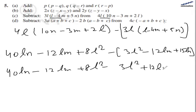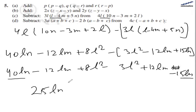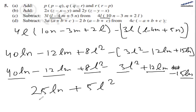Opening the second bracket gives minus 15ln. So 40ln minus 15ln becomes 25ln. The terms minus 12lm and plus 12lm cancel out to give 0. And 8l² minus 3l² becomes 5l². So the answer is 25ln plus 5l².